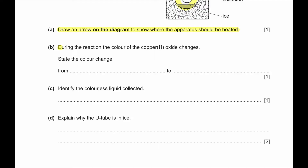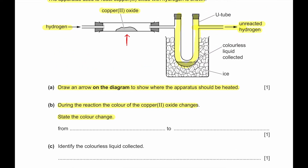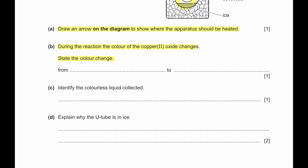During the reaction, the color of the copper oxide changes. Copper oxide is a black solid, and once it reacts with hydrogen it produces copper plus water. The copper has a brown color, so the color change will be black to brown.